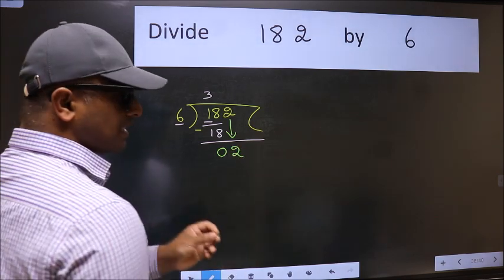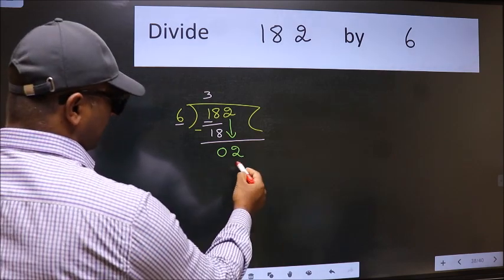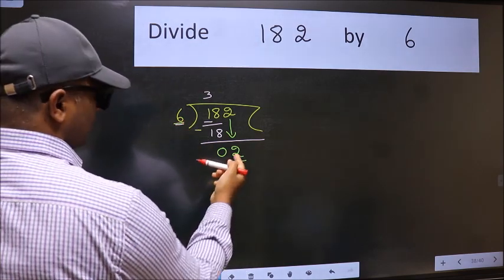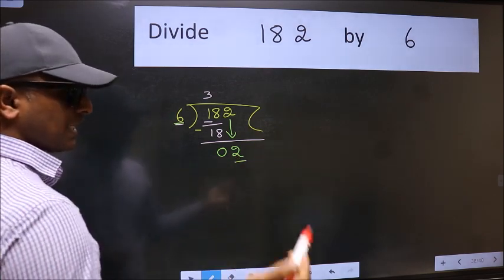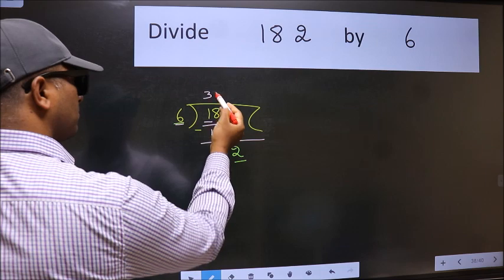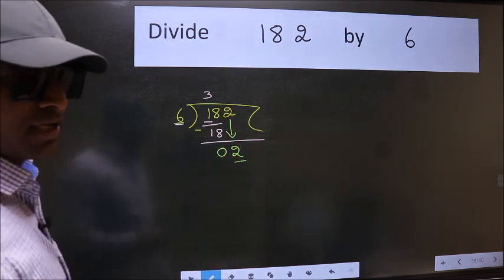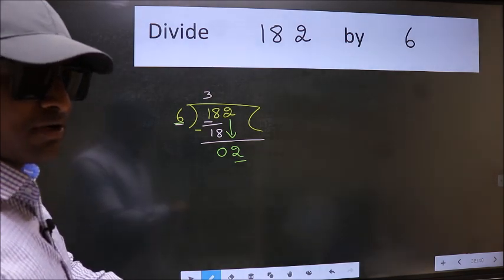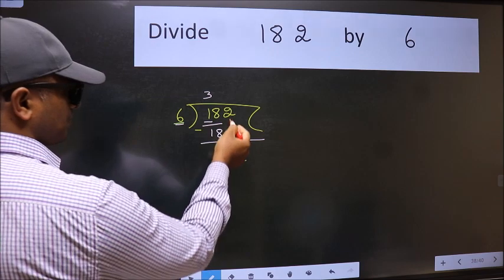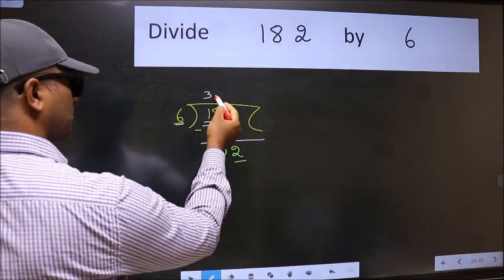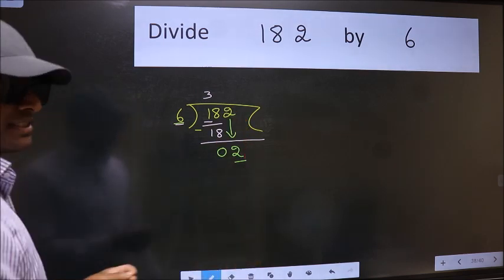After this step, the mistake happens. The mistake is this: here we have 2 and here 6. 2 is smaller than 6. So what many do is they directly put a dot and take 0, which is wrong. Why is it wrong? Because you just brought this number down, and in the same step you want to put a dot and take 0, which is wrong.